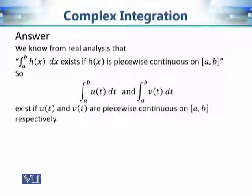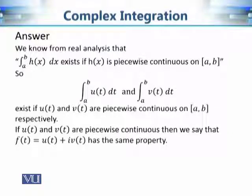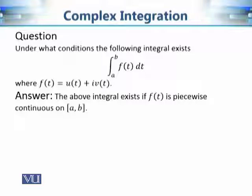Applying this criteria to our two integrals of u of t and v of t: these two integrals exist if u of t and v of t are piecewise continuous on the closed interval a to b. When this holds, we say the complex valued function f of t = u of t + i·v of t is piecewise continuous, and our integral of f of t from a to b exists. This settles the question of existence.